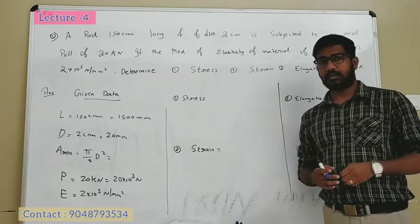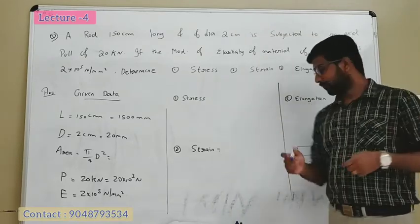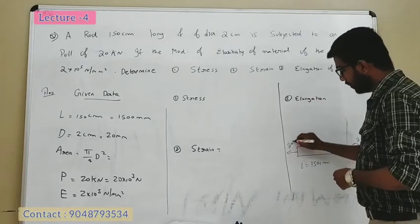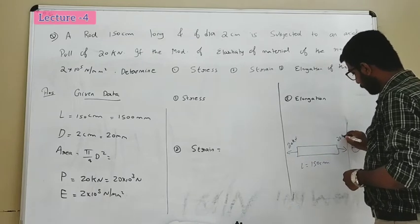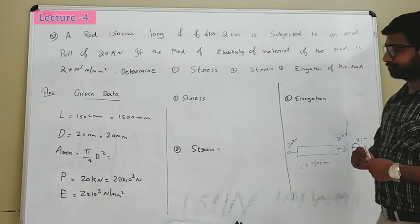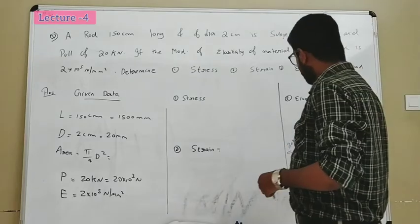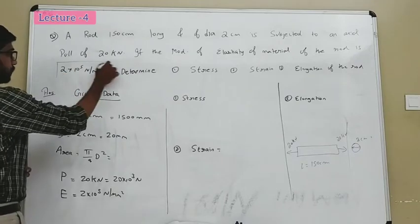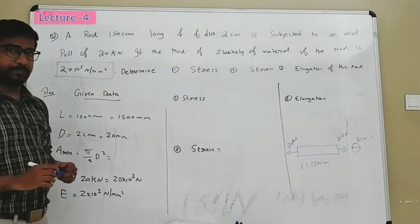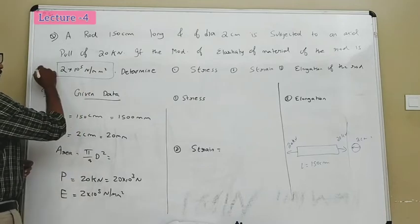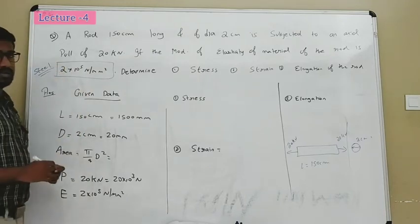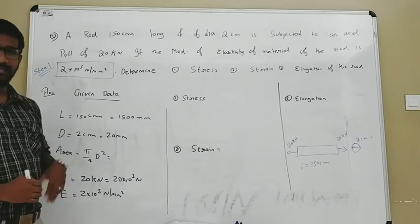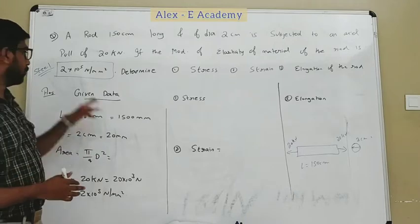We have a tension force — an axial pull. The pull is a tensile force. The pull is 20 kilo Newton. This material has a modulus of elasticity of 2 into 10 raised to 5 Newton per mm².